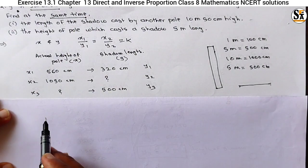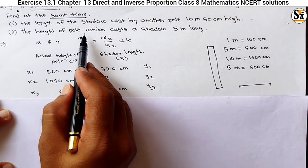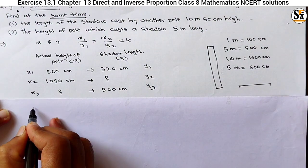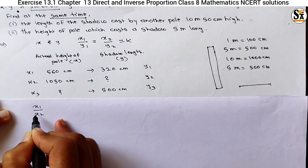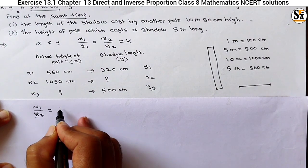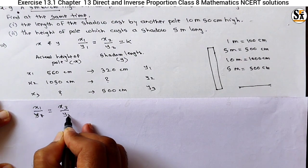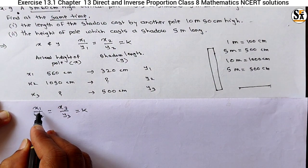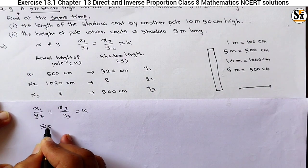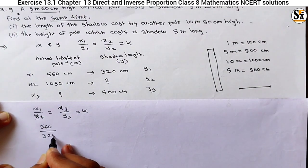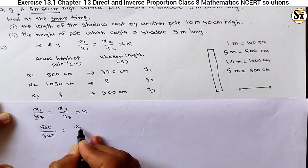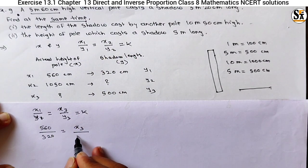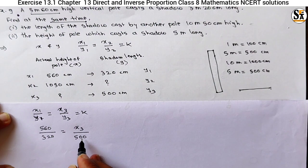Now see the second sub-question: the height of pole which casts a shadow of 5 meters. We have to calculate x3. Using direct proportion, x1 upon y1 equals x3 upon y3, because this ratio is always constant. x1 is 560, y1 is 320. We have to calculate the actual height of the pole which casts a shadow of 500 centimeters.